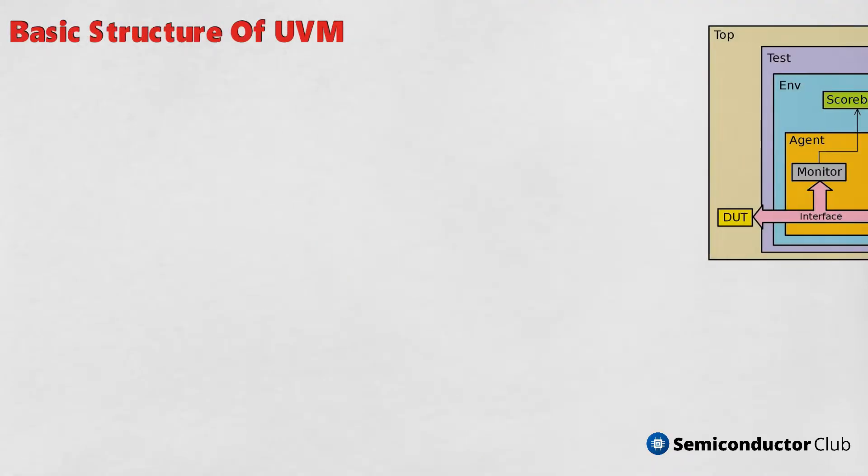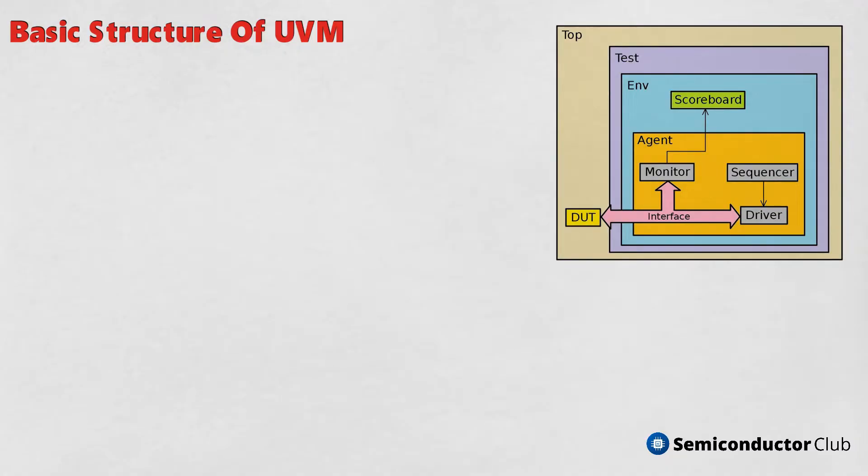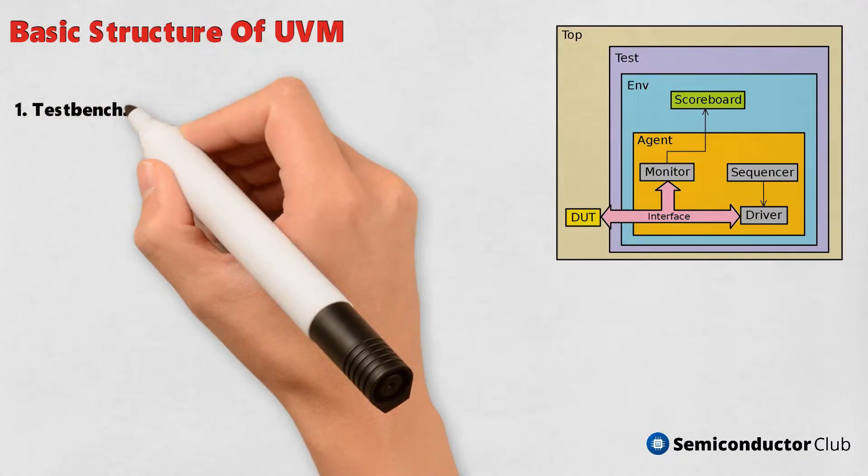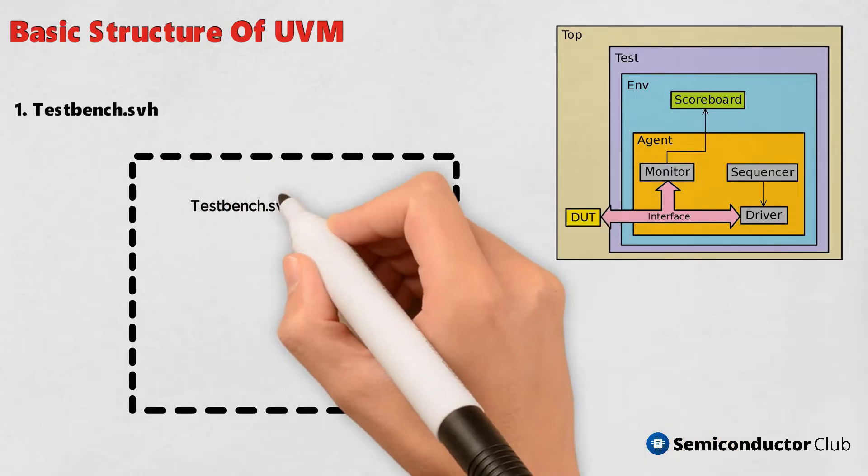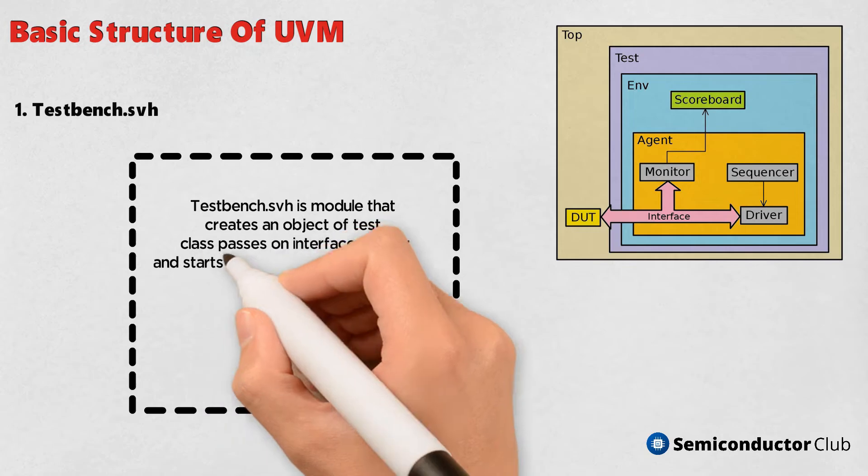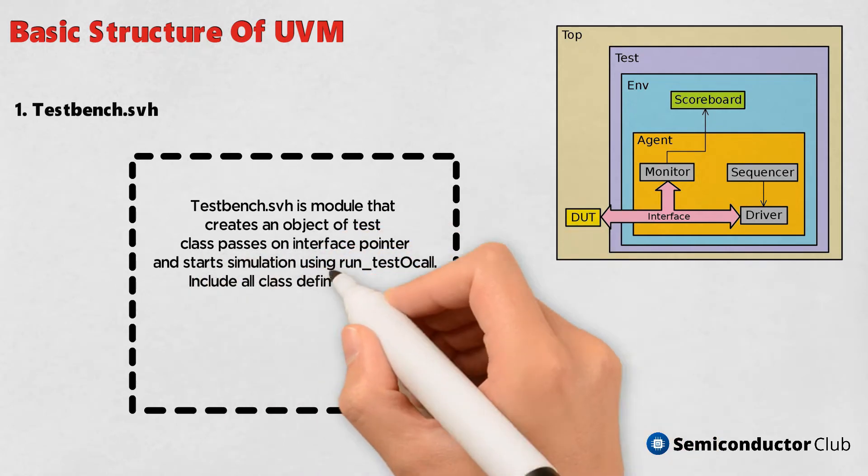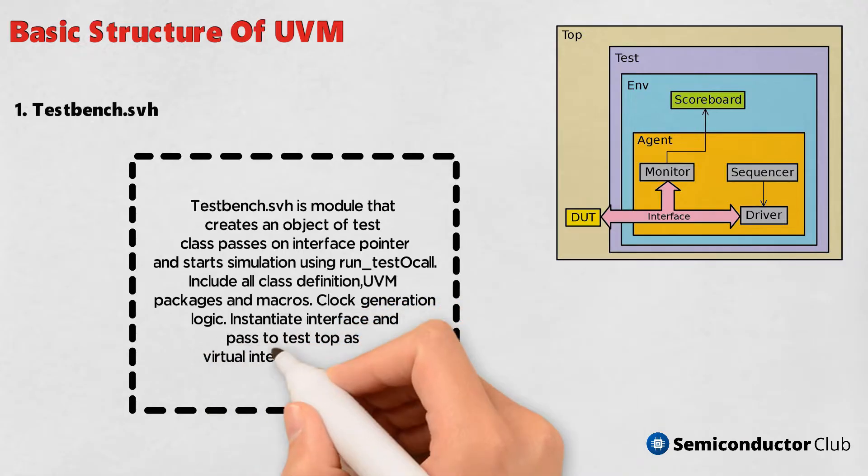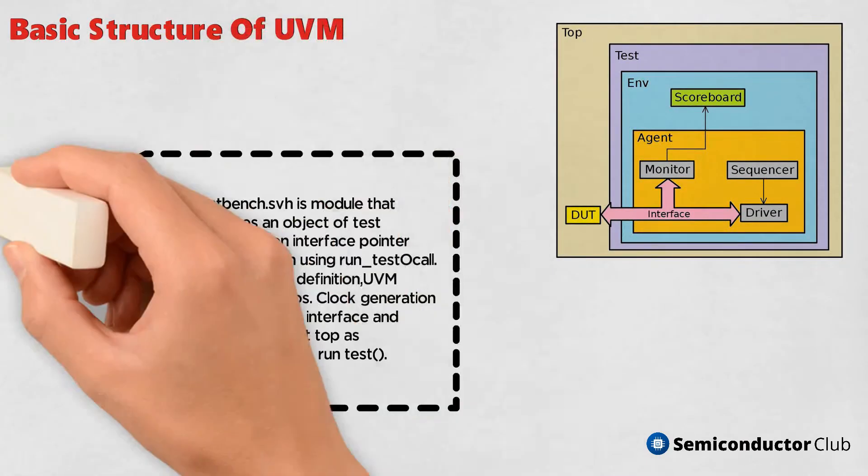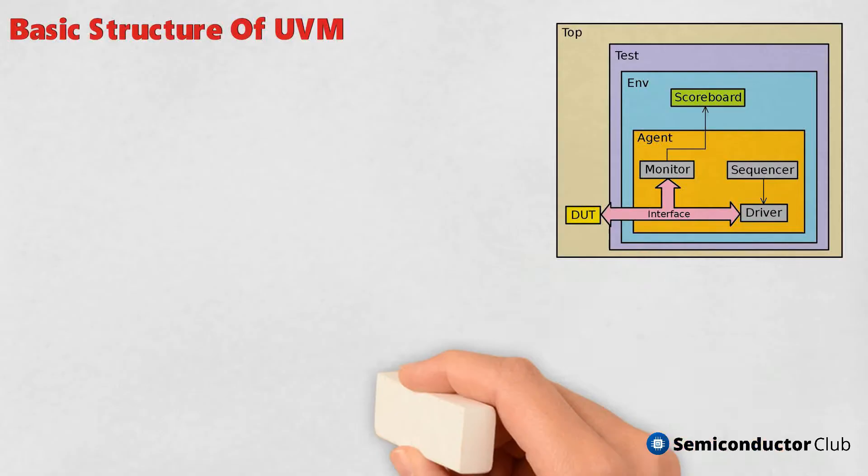1. Testbench.svh - Testbench.svh is module that creates an object of test class, passes on interface pointer and starts simulation using run_test call. Include all class definition, UVM packages and macros, clock generation logic. Instantiate interface and pass to test top as virtual interface. Run test.